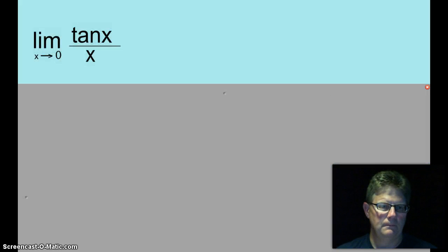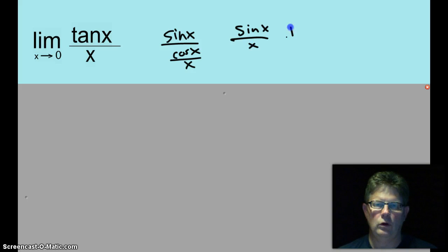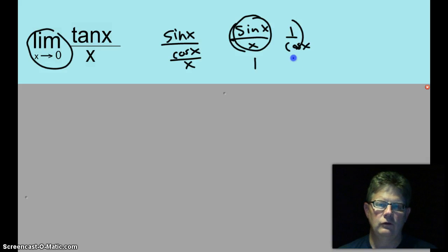The limit as x approaches zero of tan x over x. Well what is tangent x again? That's sine x over cosine x. So that would be sine of x over cosine of x all over x, which could be rewritten as the sine of x over x times one over cosine x. And now we're going to take the limit as x approaches zero of that. That part will be one. This other part here will replace the zero, the x with a zero. Cosine of zero is one. So that's going to be one times one. That limit is one.